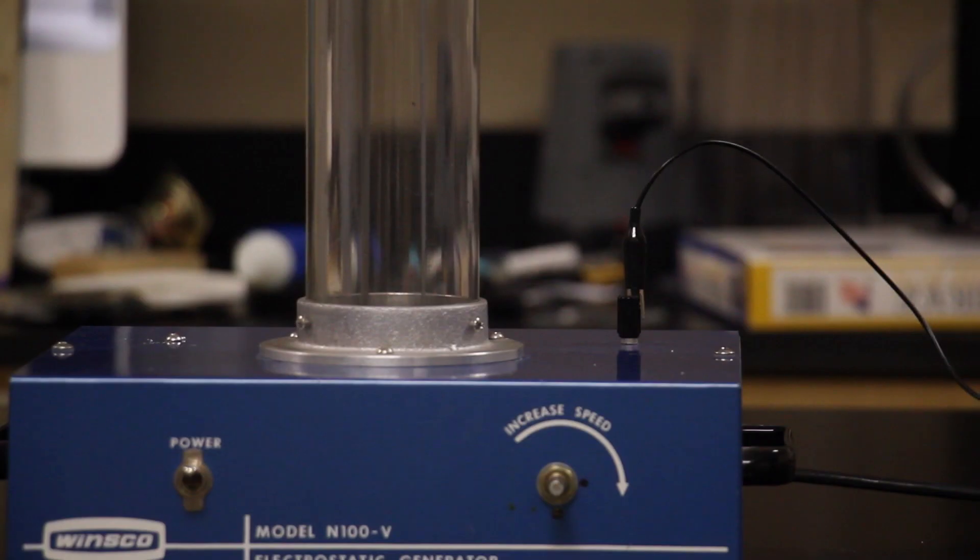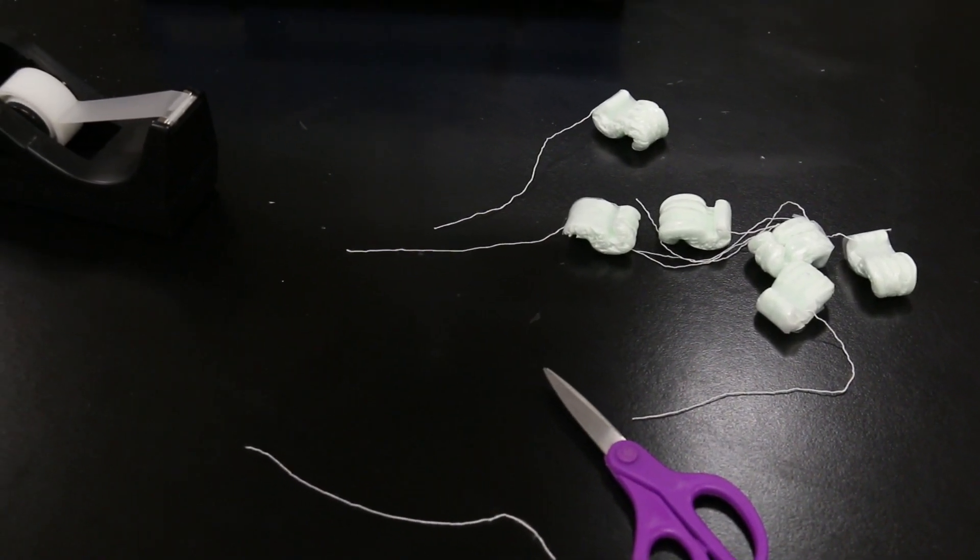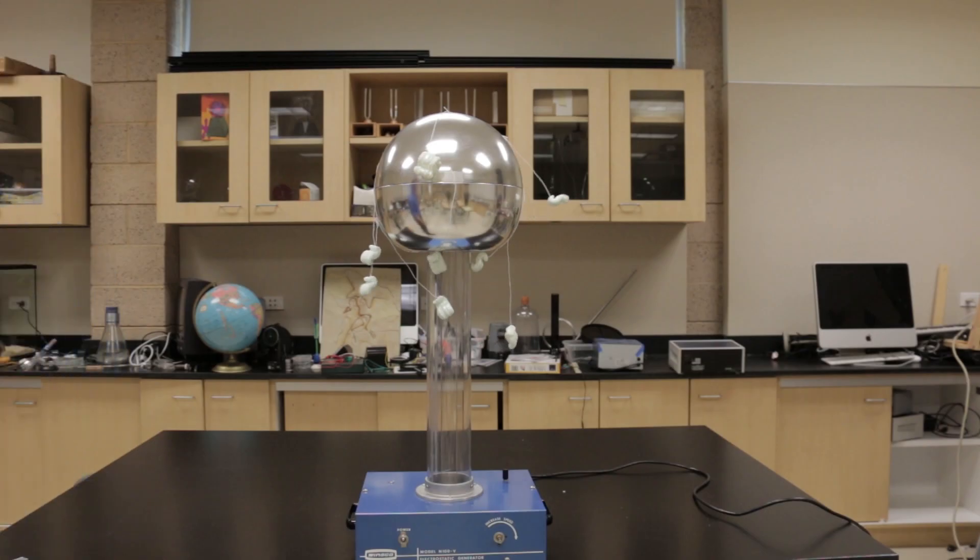Notice also that these lightning rods are connected to the ground. Of course, you can also use the Van de Graaff generator to demonstrate radial electric field lines. For example, you can tape streamers on the top of the Van de Graaff, and they will point radially outward.